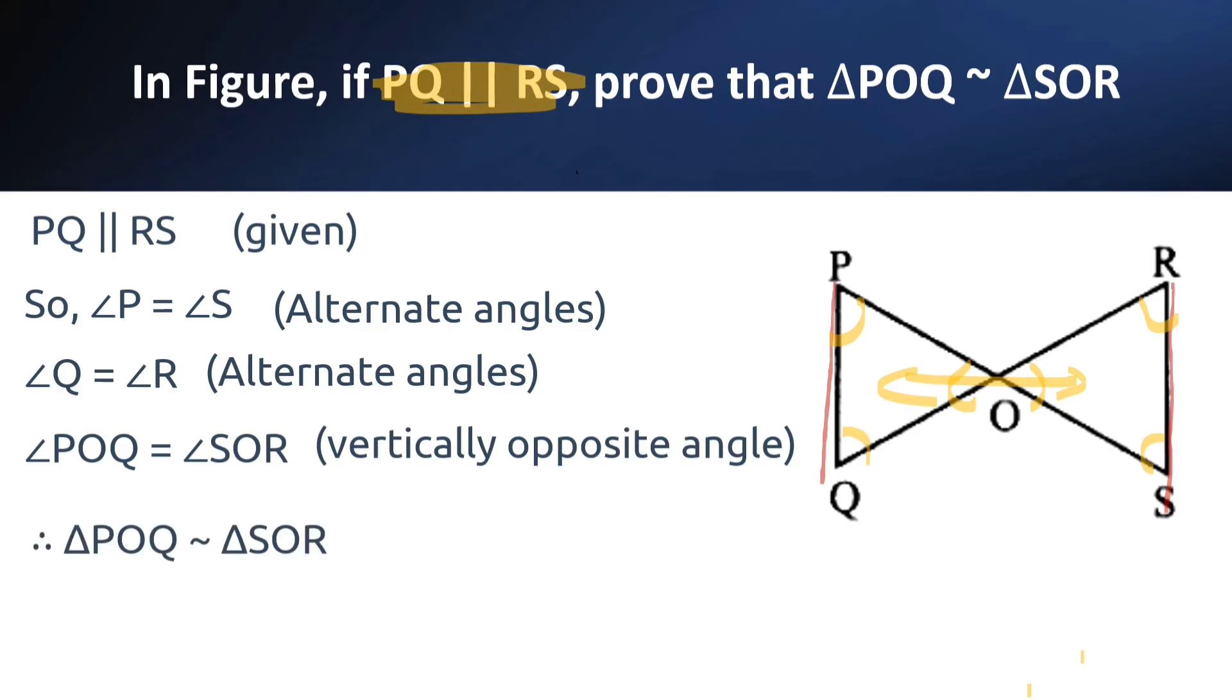Therefore, triangle POQ is similar to triangle SOR by the angle-angle-angle similarity criterion.